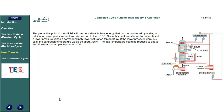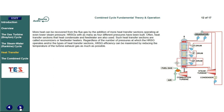The gas at this point in the HRSG still has considerable heat energy that can be recovered by adding an additional lower pressure heat transfer section. Since this section operates at a lower pressure, it has a correspondingly lower saturation temperature. If the lower pressure were 125 PSIG, the saturation temperature would be about 335 degrees Fahrenheit, and the gas temperature could be reduced to about 360 degrees Fahrenheit with a second pinch point of 25 degrees Fahrenheit. More heat can be recovered by adding more heat transfer sections at even lower steam pressures. HRSGs with as many as four different pressures have been built. Heat transfer sections that heat condensate and feed water, called economizers or feed water heaters, are also commonly used.